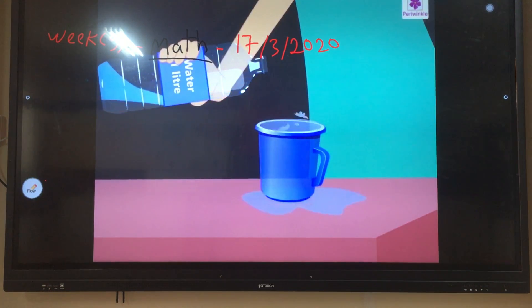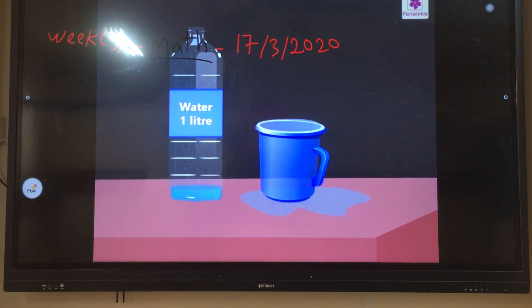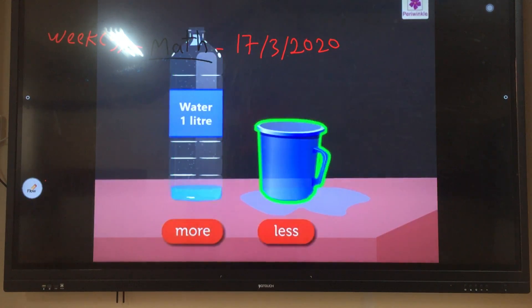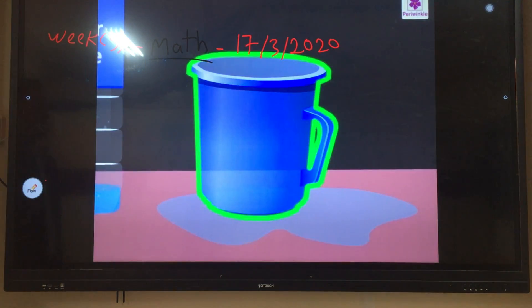Let's pour this water in the jar. Look, the water started overflowing and fell out of the jar. Hence, we can say that the capacity of the bottle is more than the jar. That is, the bottle can hold more water than the jar.